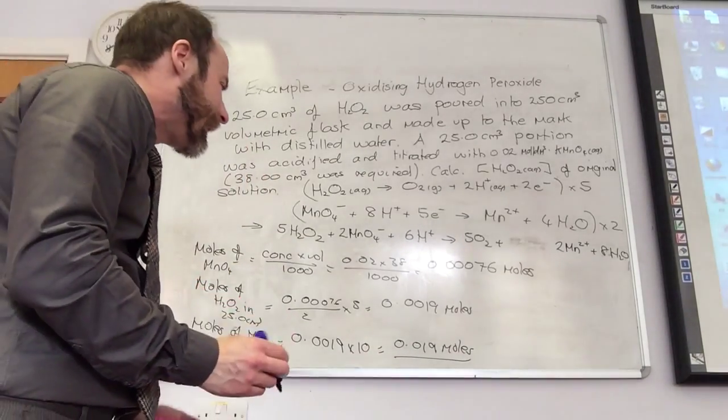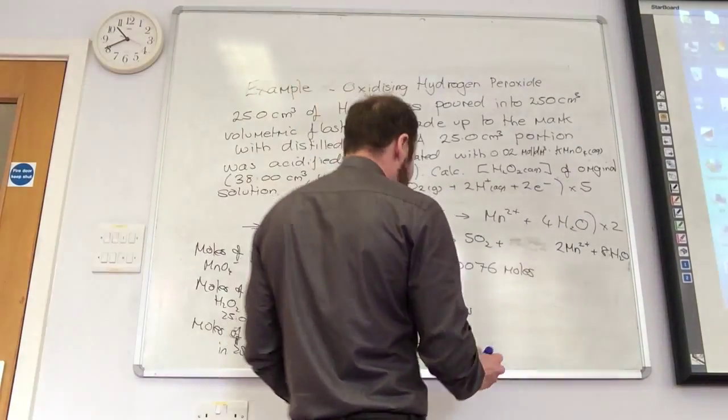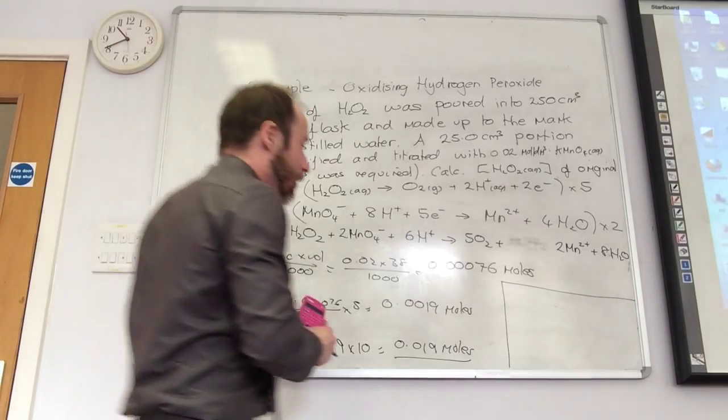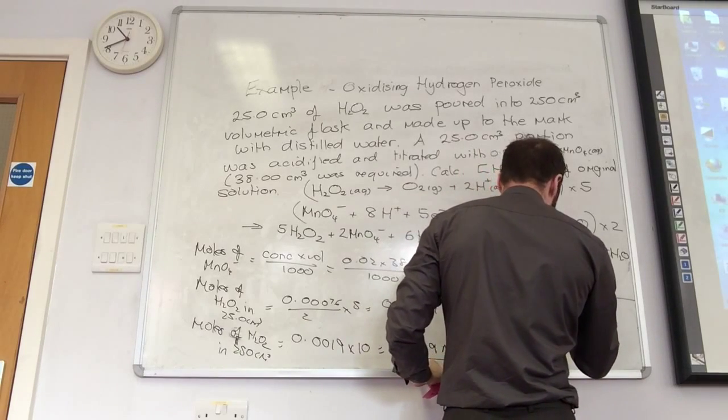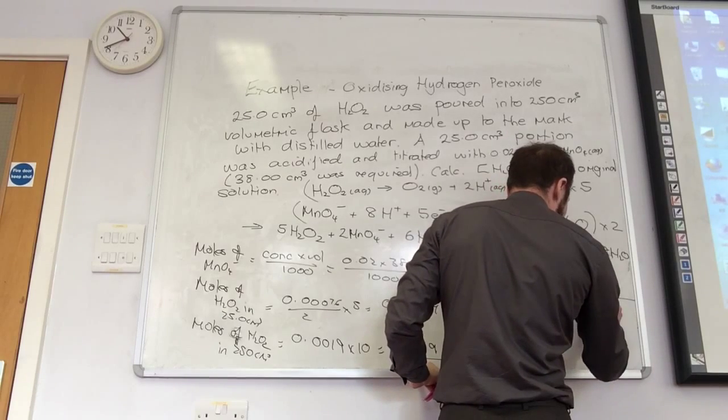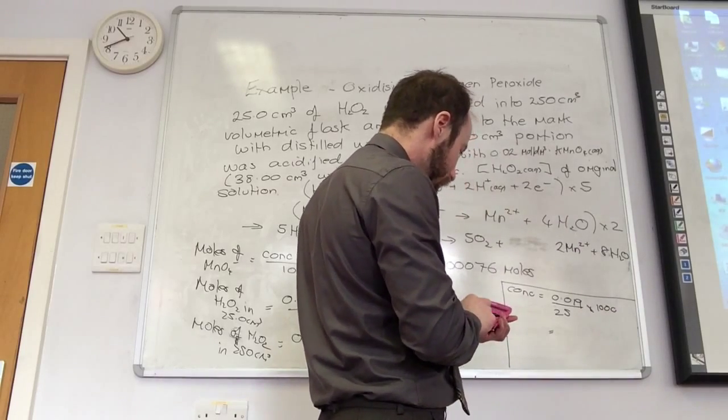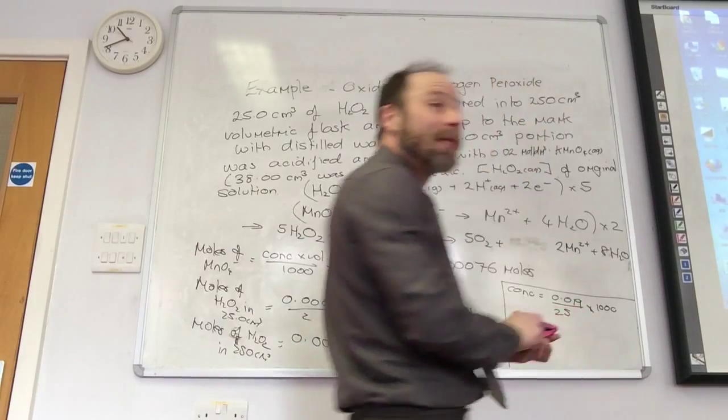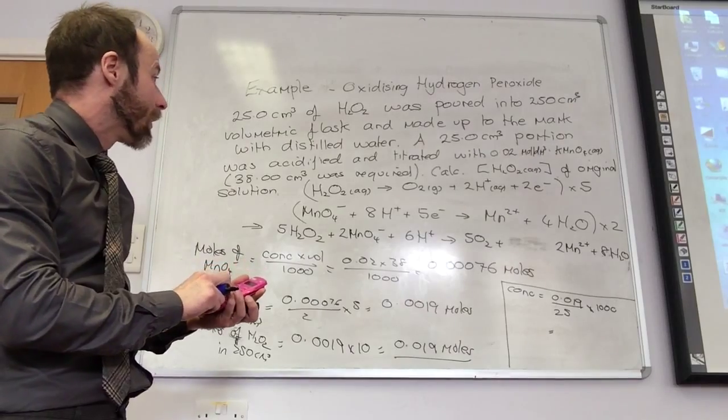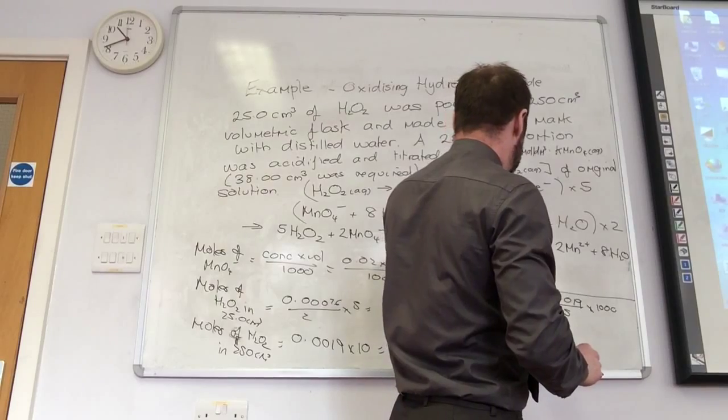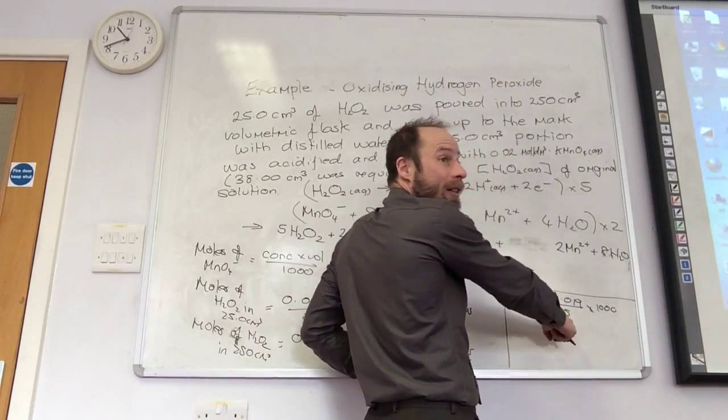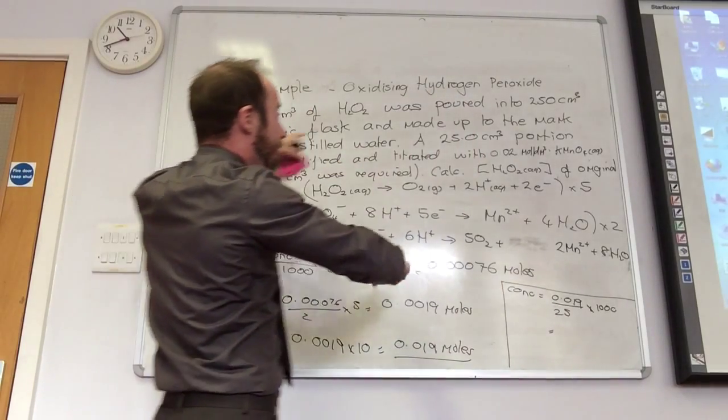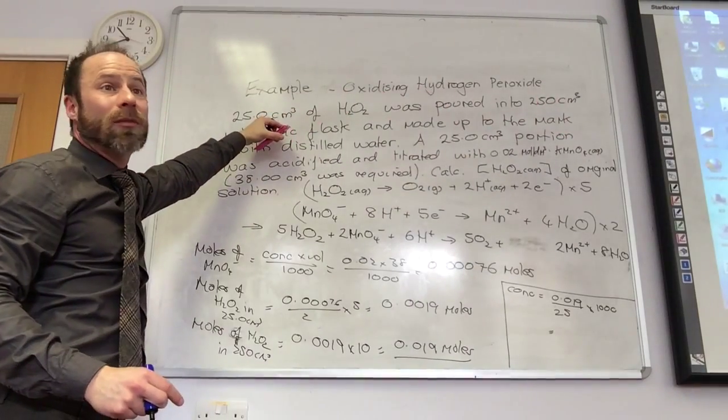So let's scale that up. How many moles did I have? Moles of H2O2 in the 250 cm cubed. 0.0019 times 10, which is 0.019 moles. Then you just do concentration. My concentration of the original solution is going to be that number of moles divided by 25 times by 1000. Is that because the number of moles of H2O2 would be the same in the 25 or the 250? Yeah, I took that number of moles and added it to the original solution.